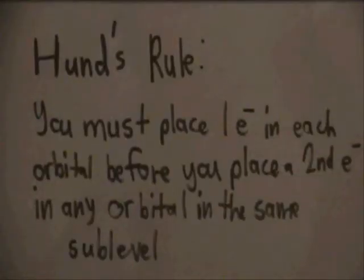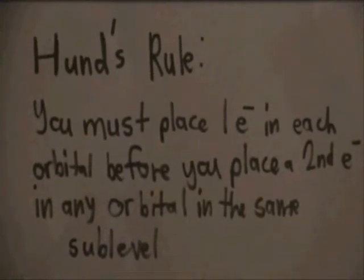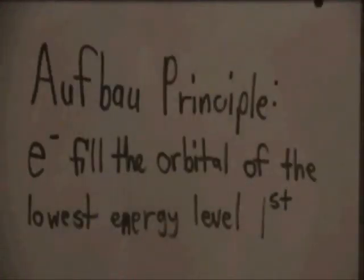Hund's Rule states you must place one electron in each orbital before you place a second electron in any orbital of the same sub-level. The Aufbau principle states that an electron must fill the orbital of the lowest energy level first.